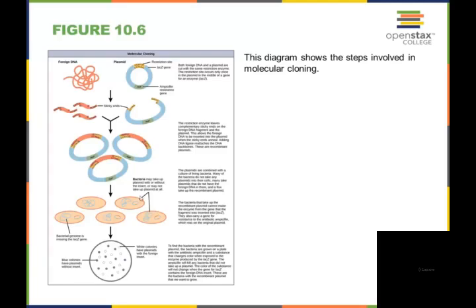Bacteria will take up plasmids with or without the insert. They may not take up the plasmid at all. Your plasmids get combined with the culture of living bacteria. Because many of the bacteria do not take the plasmids up into the cells, you can have plasmids that do not have foreign DNA in them. And a few will take up the recombinant plasmids. This means we're going to need to separate things.